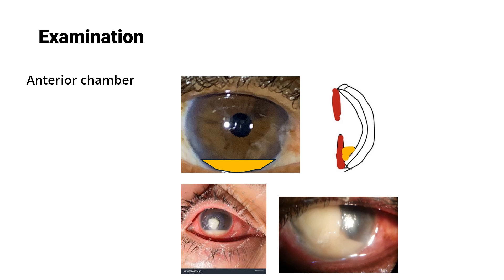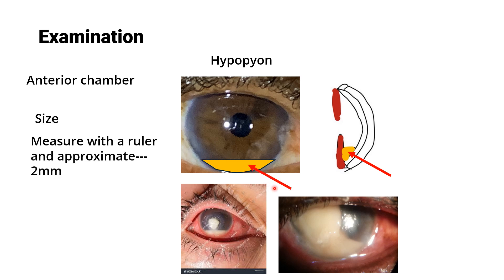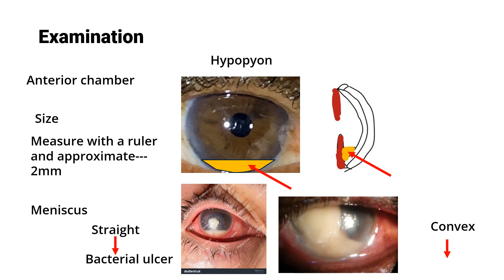After describing the cornea, discuss the anterior chamber. Look for hypopyon — pus in the anterior chamber between the cornea and iris, settling in the lower part. Measure the hypopyon with a ruler and comment on its meniscus — the uppermost margin of the fluid. A straight meniscus is seen in bacterial ulcers; a convex meniscus is seen in fungal ulcers.